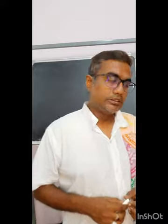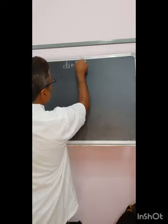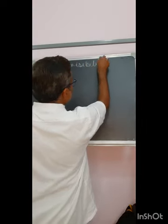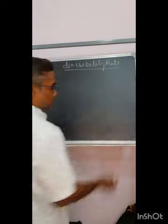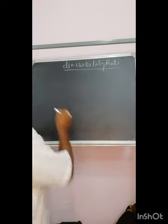Welcome back. This is the fifth chapter on number. Till the last video, I have explained up to the divisibility rule for three. And now I will explain further digits. The topic is the same: divisibility rules. I ended the last video at three.